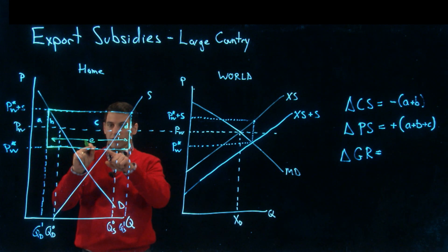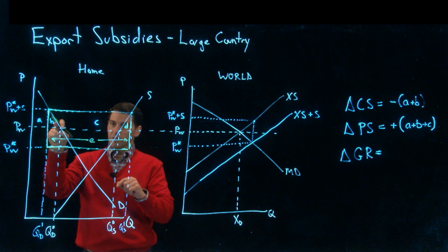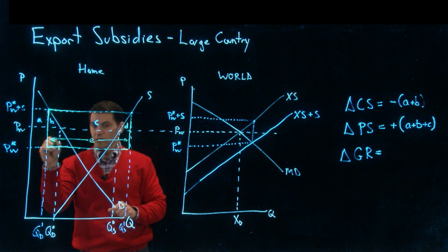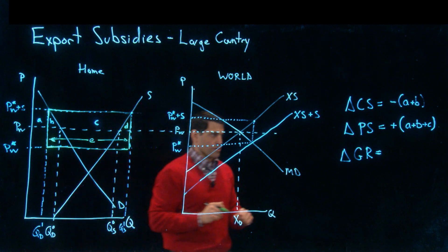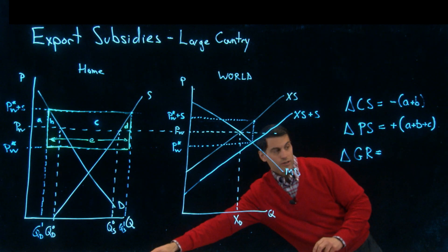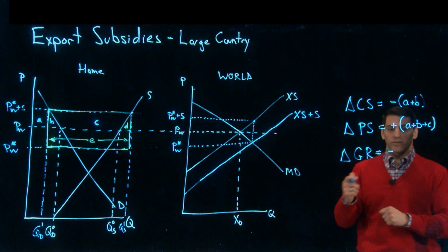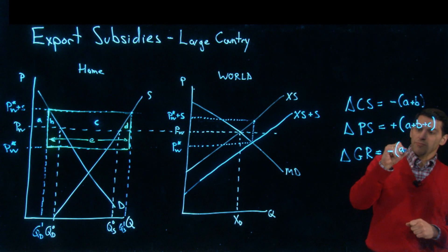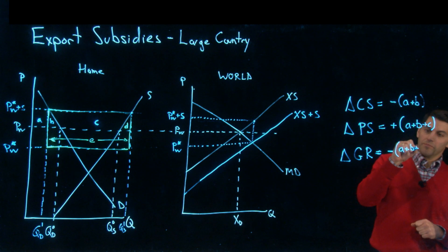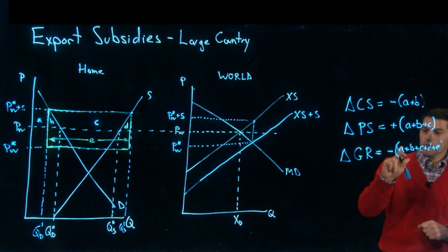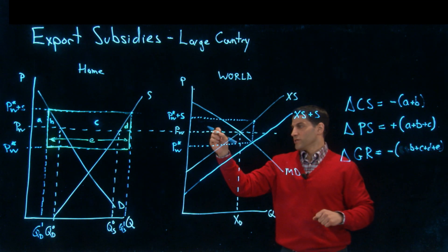That's the lower half of this rectangle, between QD one, QS one, and PW star and PW star plus S. This rectangle is the total subsidy cost. The subsidy cost is B, C, D and that whole area E, which goes all the way out to the ends there. If we add that back in, remember this is a cost, so you put a minus sign on it because it's the cost of running this subsidy program. B, C, D and E.